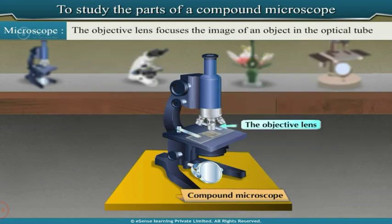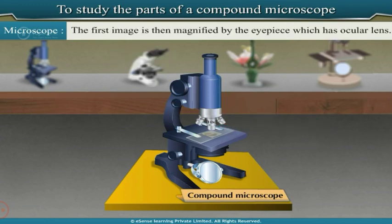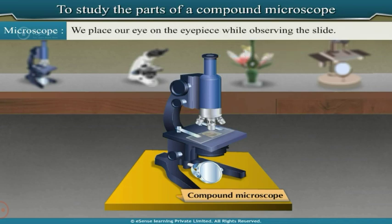The objective lens focuses the image of an object in the optical tube of the microscope. This is called the first image. The first image is then magnified by the eyepiece, which has the ocular lens. We place our eye on the eyepiece while observing the slide.